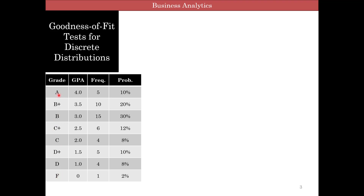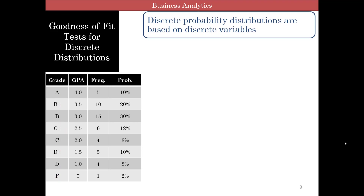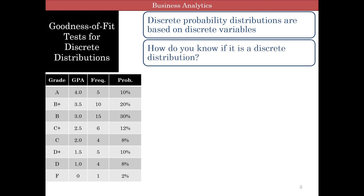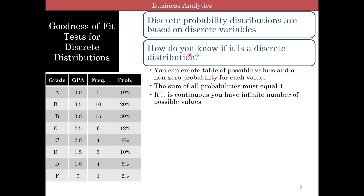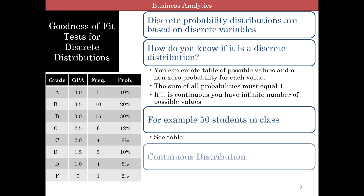So we have discretized this into eight different categories. Here is the number of students in those categories and their probability, which is essentially the percentage — 5 divided by the total number of students. I think there's about 50 students in the class. Discrete probability distributions are based on discrete values, and you know it is a discrete distribution if you can create a table of possible values and a non-zero probability for each value. If it is continuous, you'll have an infinite number of values.